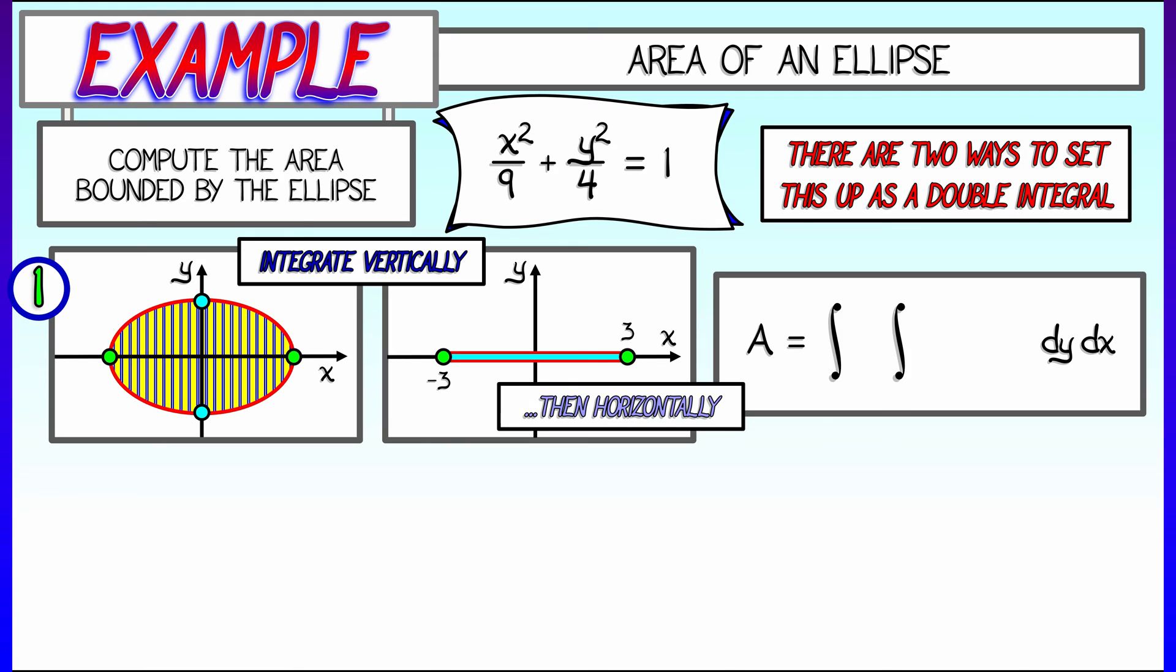And then, fixing a value of x, we solve for y. The limits on y are going to go from negative square root of 4 minus 4 ninths x squared to positive square root of 4 minus 4 ninths x squared. We get that by solving the equation for the ellipse for y in terms of x. And then we integrate x going from negative 3 to positive 3. Okay, that's the first approach to doing this integral.